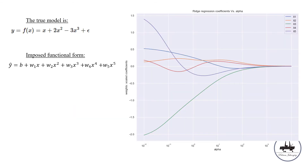Let's look at an example. Imagine this is a true relationship in the data: y equals x plus 2x squared minus 3x cubed. Remember, in the real world this true relationship is not observable. Here we're working with simulated data to see how penalized regression — specifically ridge regression — is able to give us back the right coefficients. So W1 equals 1, W2 equals 2, and W3 equals minus 3. We're trying to estimate and get as close as possible to that true relationship.